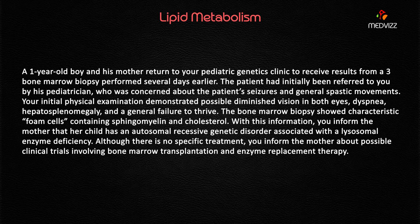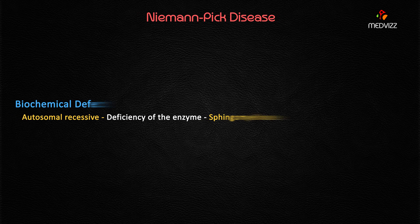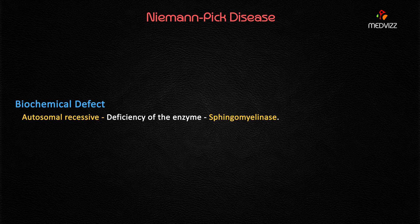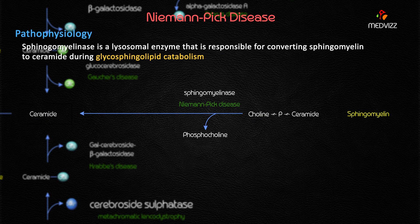When you see characteristic foam cells containing sphingomyelin and cholesterol, the diagnosis is Niemann-Pick disease. You inform the mother that her child has an autosomal recessive genetic disorder associated with a lysosomal enzyme deficiency — specifically, sphingomyelinase deficiency. This enzyme is responsible for the conversion of sphingomyelin to ceramide. There is no available treatment.